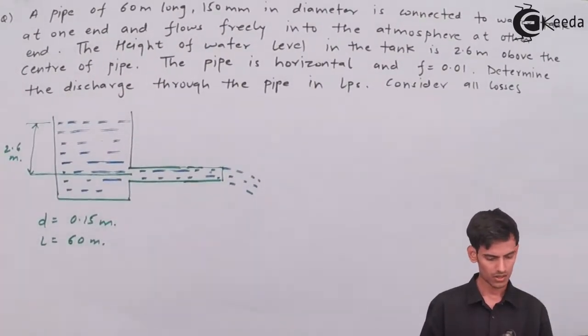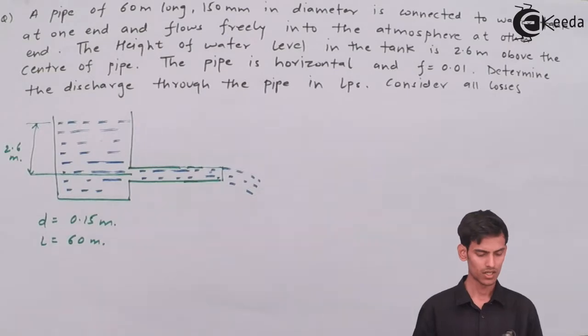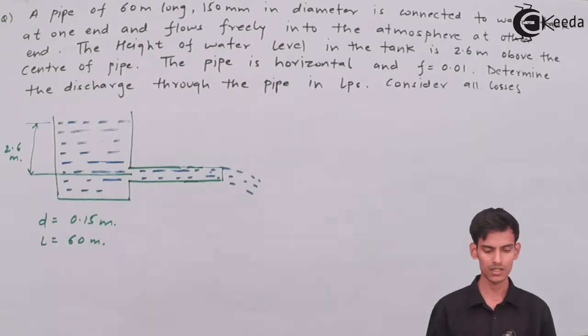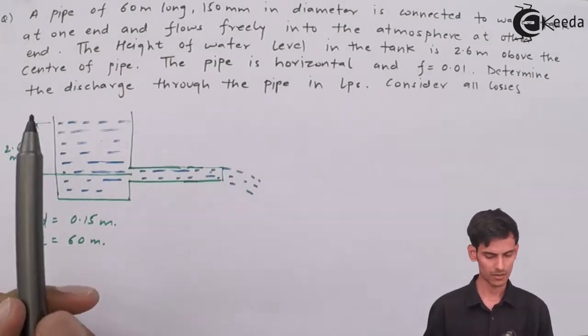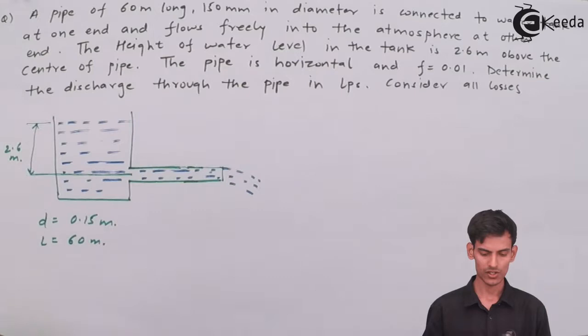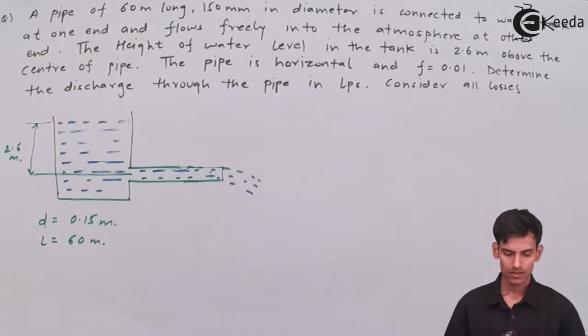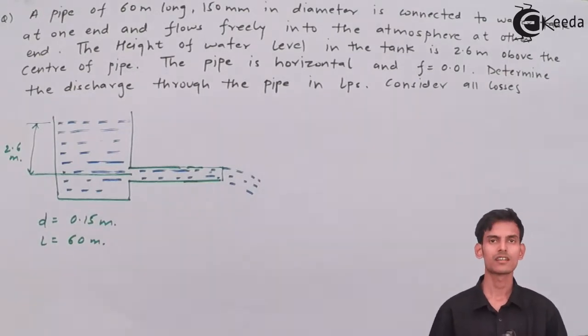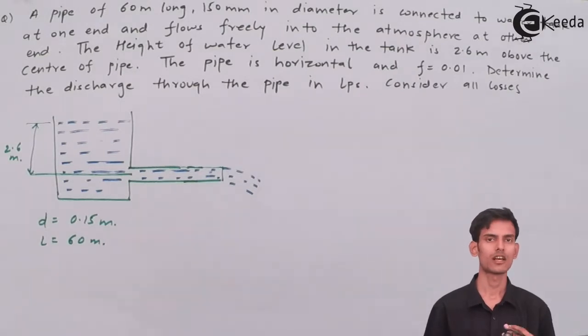Let's review the data. The length of the pipe is 60 meters, diameter is 150 mm. The height of the water level is 2.6 meters above the center of the pipe. The pipe is horizontal. The friction factor is 0.01. We have to determine the discharge considering all the losses.